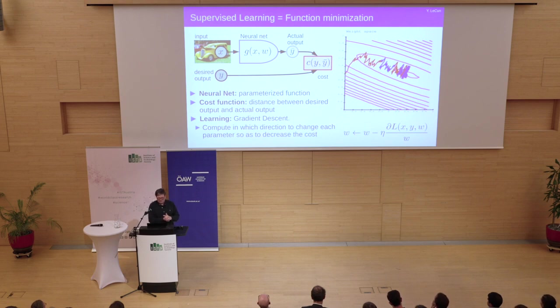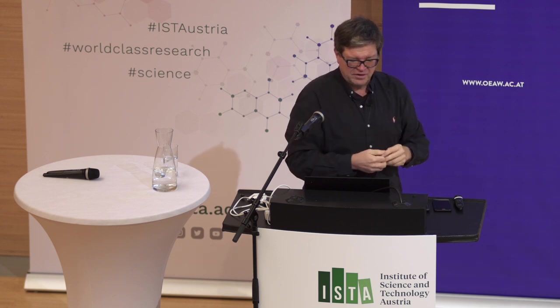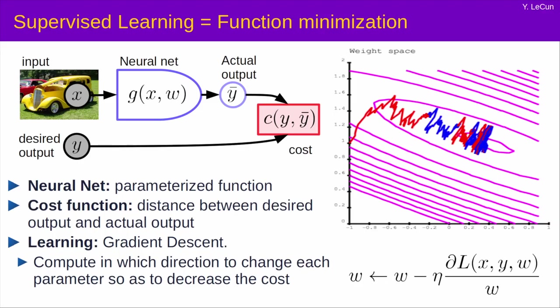So mathematically what supervised learning really is, is basically the problem of finding the minimum of a function. So you measure for every example you show the system, you measure the distance between or divergence, some measure of distance between the output you want that encodes the label and the output the machine produces. Okay, so that's an error term. If the system produces the correct answer that error is zero or very close to zero. And then you compute the average of that over the thousands or millions of training images that you have. And that gives you a number.